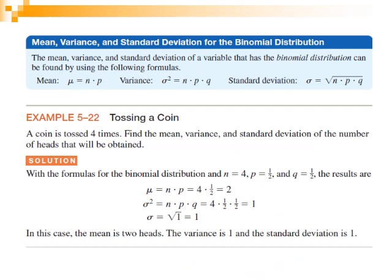Now, the final topic: how to get the mean, variance, and standard deviation for the binomial distribution. We have three formulas. The mean is μ = N × P. The variance is σ² = N × P × Q. The standard deviation is σ = √(N × P × Q).